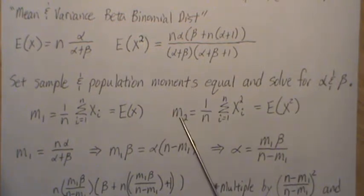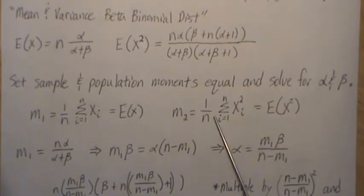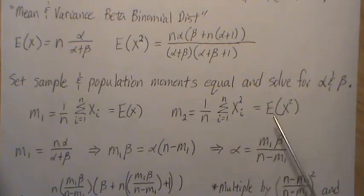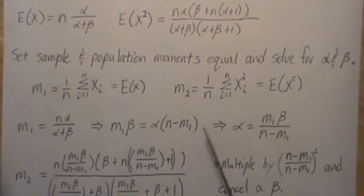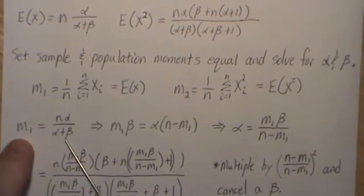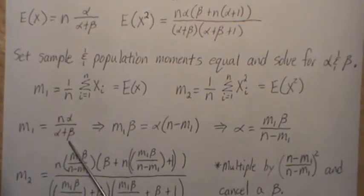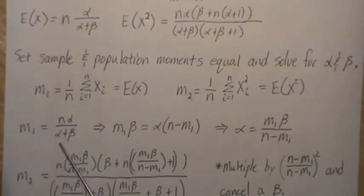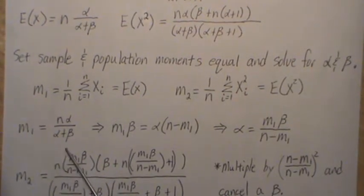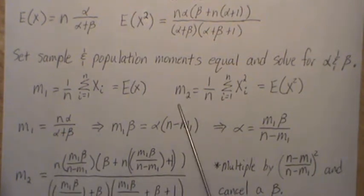And then we do that for the population second moment. We look at the sample second moment, which is the sum of the xi squared divided by n. And now we start solving. Here, we bring it down, then we multiply this up, and then subtract over alpha m1, and we get this equation.